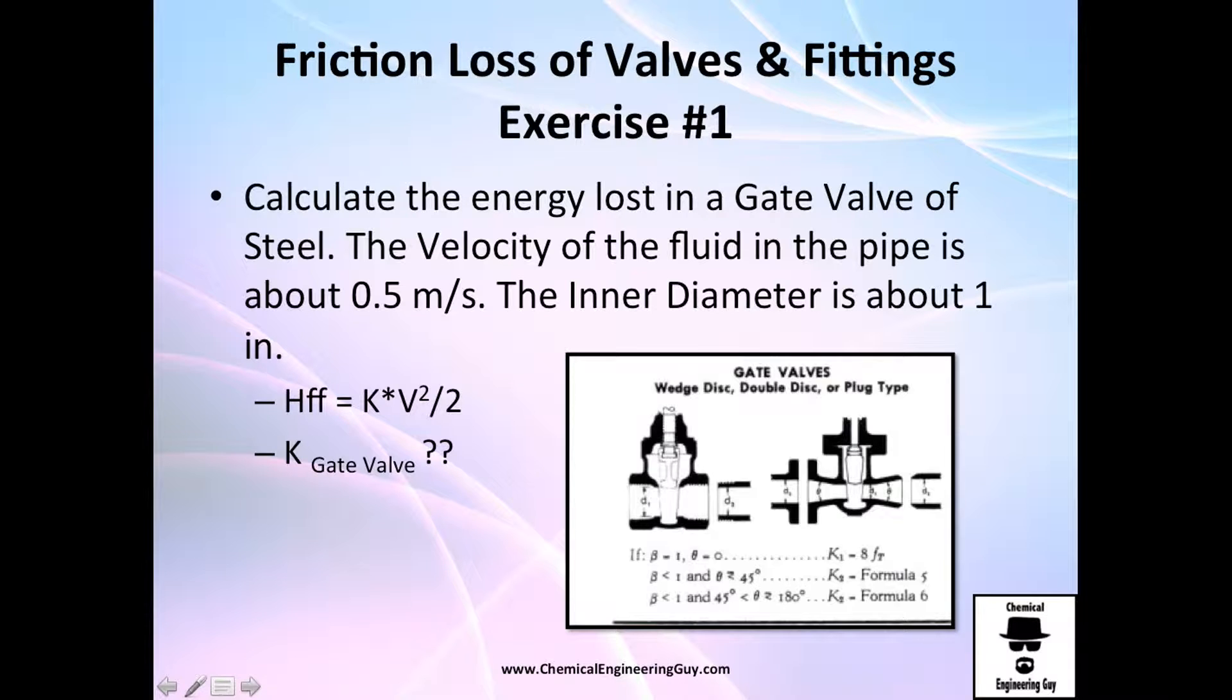Let's do an exercise now that we know there is plenty of data in databases, on the internet, and in books. Let's calculate the energy being lost when we pass through a gate valve of steel. The velocity of the fluid will be 0.5 meters per second and the inner diameter is about one inch.